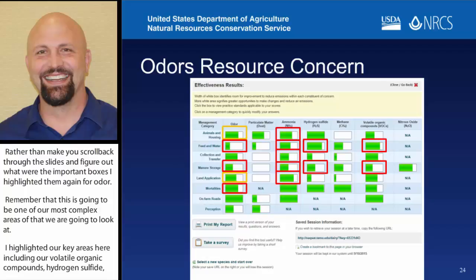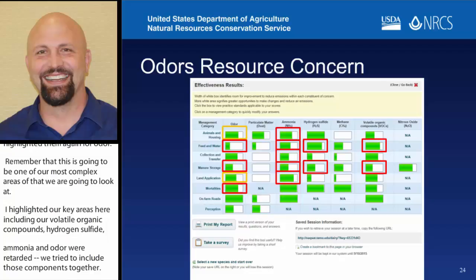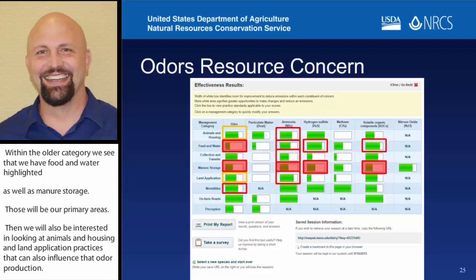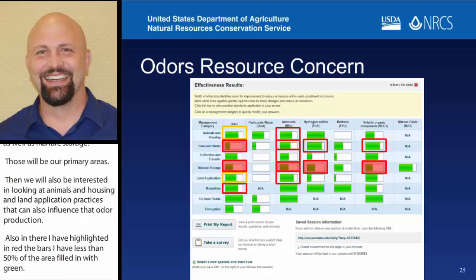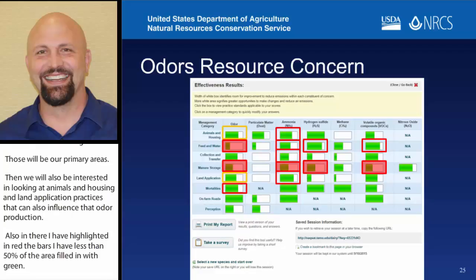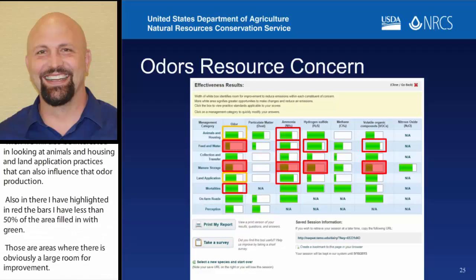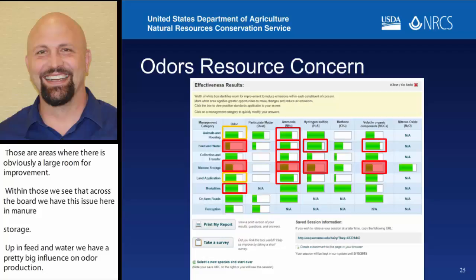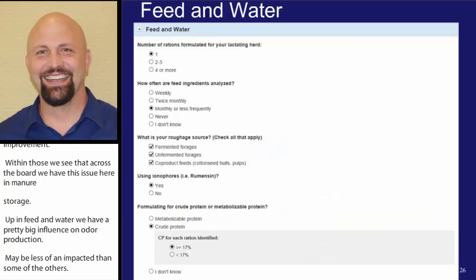Within that odor category, we see that we have feed and water highlighted, as well as manure storage and mortality — those are going to be our primary areas — and we're also going to be interested in looking at animals and housing and land application practices that could also influence odor production. I've highlighted here in red these bars that have less than 50% of the area filled in with green. Those are areas where, obviously, there's a large room for improvement. Within those, we've kind of got this issue somewhere in manure storage, and up in feed and water we have a pretty big influence on odor production. Those are two areas we probably want to go back and look at and run our copied new session in.